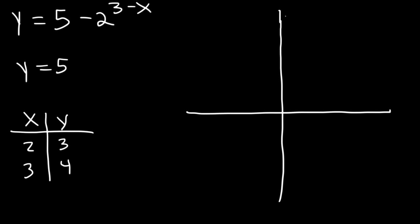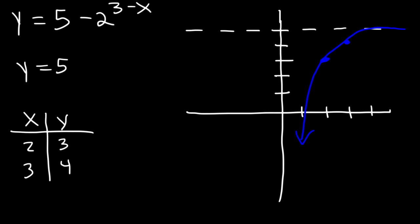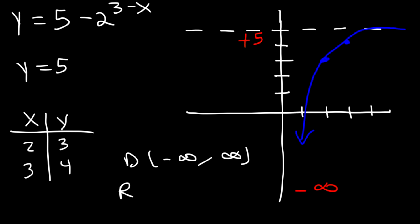Let's graph it — we start with the horizontal asymptote at y equals five. We have the point (2, 3) and also (3, 4). The graph starts from the horizontal asymptote and follows those two points. It's decreasing in this case due to the negative sign in front. The domain is all real numbers, negative infinity to infinity. The range: the lowest y value is negative infinity and the highest is positive five, so the range is from negative infinity to five.